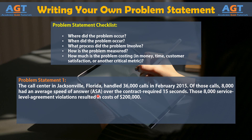8,000 calls had an average speed of answer (ASA) over the contract-required 15 seconds. Those 8,000 service level agreement violations resulted in costs of $200,000.